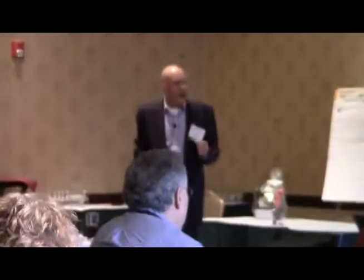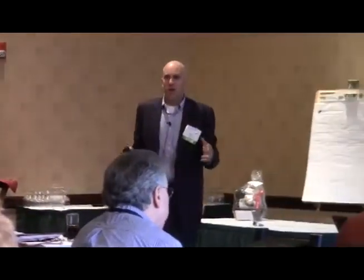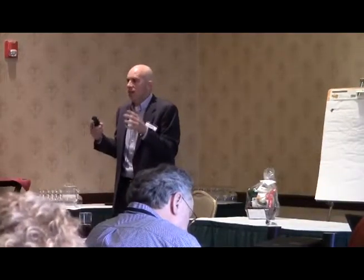The second determinant is 'who' — who enrolls? One of the fascinating findings from social services research applied to healthcare: do you know the biggest determinant of whether someone is institutionalized? It's the presence or absence of a female caregiver in the household. It's not their health status, not their need, not their risk, not their age. If there's a woman to care for them, they're less likely to be institutionalized. These are exactly the kinds of things actuaries look at when determining what rate cells are needed to differentiate risk among the enrolled population.